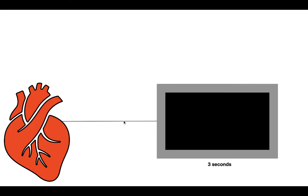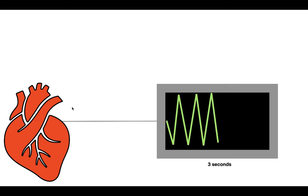Remember, the SA node is going to be the pacemaker of the heart — it is the pacemaker cells that determine how fast the heart beats. So at baseline, or the control without any parasympathetic nervous system innervation, the heart rate is going to be like this.